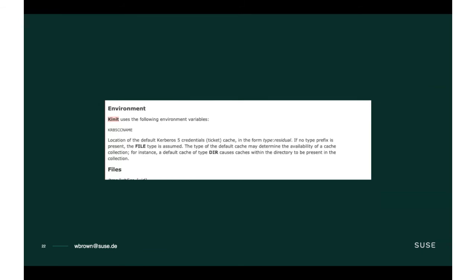Let's go back to our earlier examples. We were talking about kinit — what were the design failings? What psychology principles did kinit fail? One of the first things we might do is document the krb5_trace variable within the man page. Looking at the current man page for kinit, it does not list krb5_trace as an environment variable. But documentation is the wrong answer — this is what we have with doors: they have push-pull labels to make up for poor affordance. Adding krb5_trace to the man page doesn't fix the design failings; we're just documenting our way out of them.